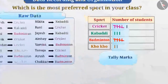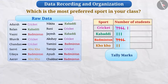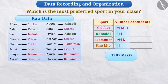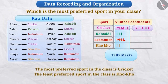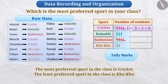Can you tell which is the preferred sport? The maximum number of tally marks are at cricket, with a count of 5 plus 1 equal to 6. Thus, cricket has the most tally marks, and we conclude that the most preferred sport in the class is cricket. Similarly, we can draw several other conclusions — for example, the least preferred sport here is kho-kho.